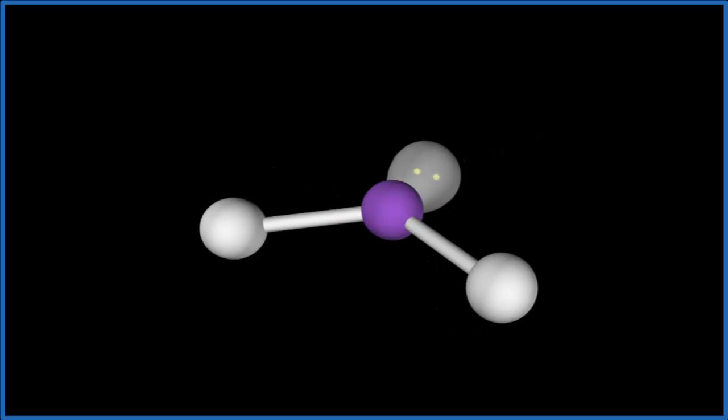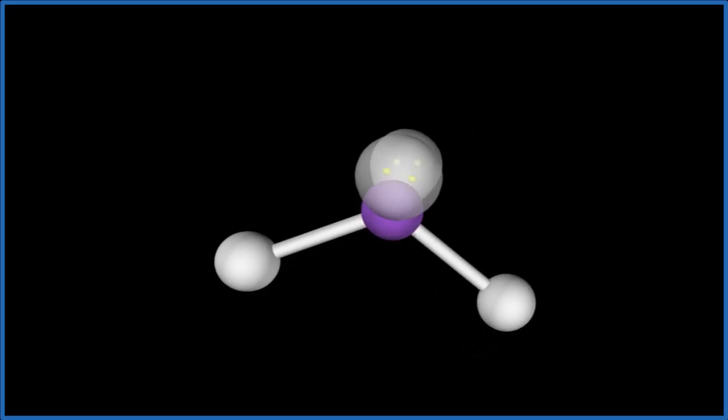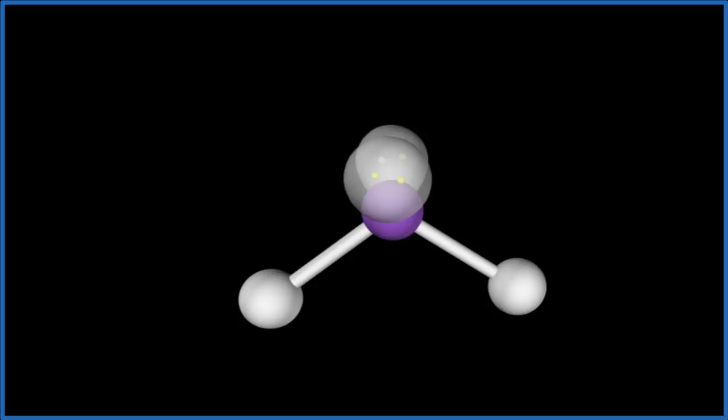We add one lone pair and you can see it pushes down the chlorine atoms. We add one more, and we end up with what's called a bent molecular geometry. If we hide the lone pairs, you'll see the molecular geometry is bent.